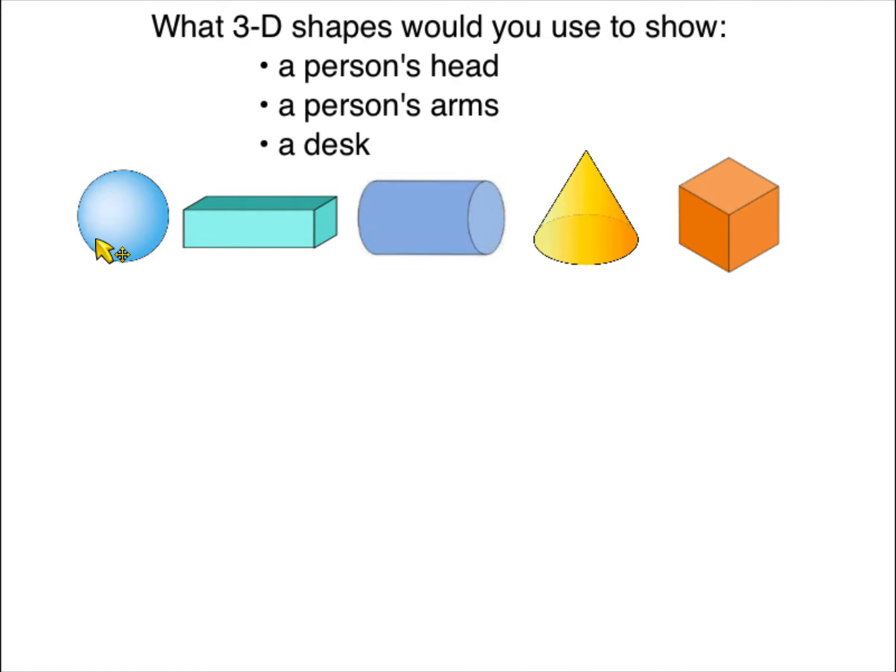So these are some of the 3D shapes that we've learned. This is a sphere, rectangular prism, cylinder, cone, and a cube.